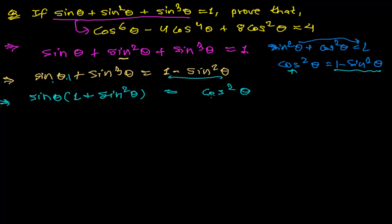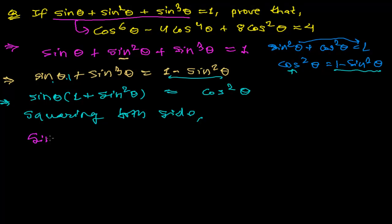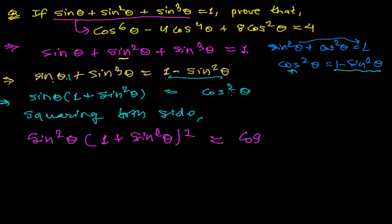Squaring both sides: sin²θ · (1 + sin²θ)² = cos⁴θ. Now I need to substitute sin²θ in terms of cosine.